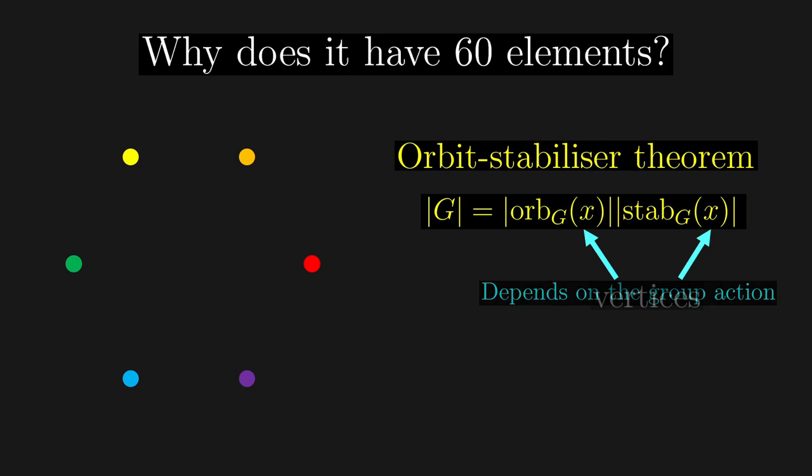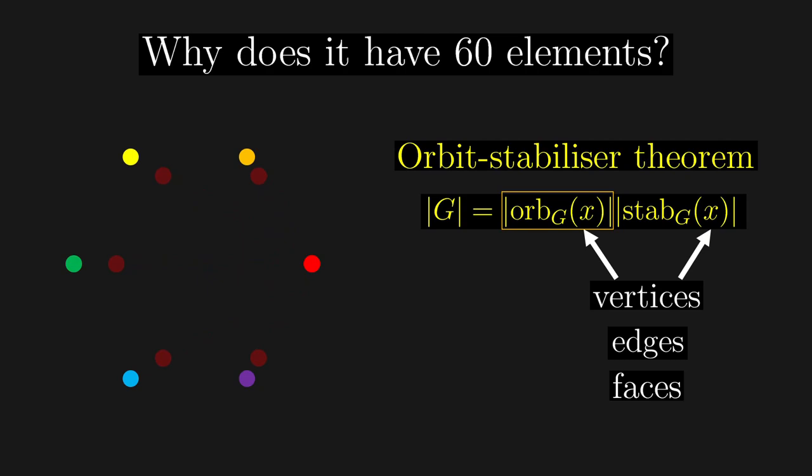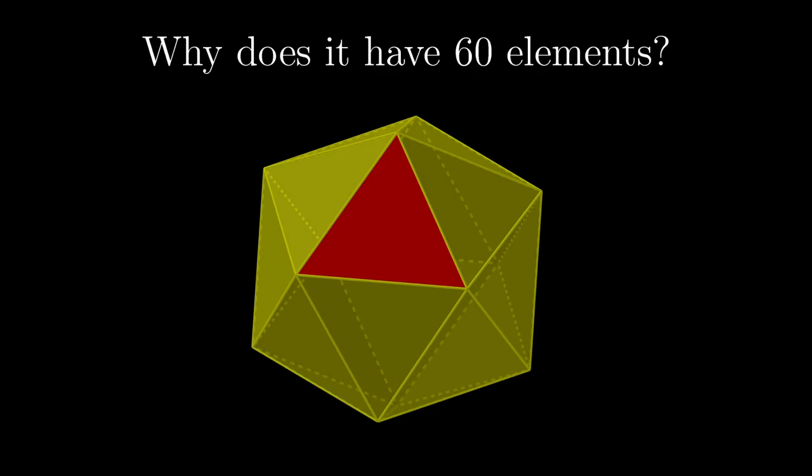There can be a few choices available. We can choose to act on vertices, edges, or faces, and then calculate the orbit and stabiliser sizes respectively, to hopefully get the number 60. We are going to choose the action on faces for now.